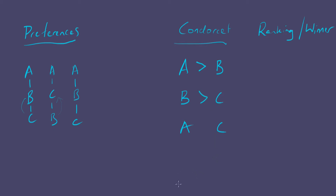Finally, we have to look at A and C. A is preferred over C by all three voters — again it's unanimous. So it looks like A beats every other option: A beats B and A beats C, making A what we call the Condorcet winner.